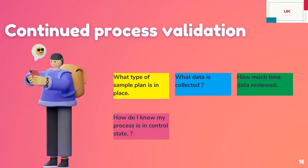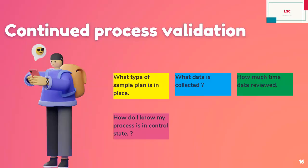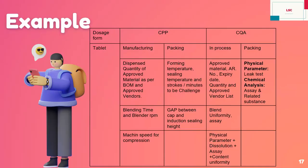Continuous process verification — this is not only validation, this is verification. For continued process verification, you have to write down: what type of sampling plan is in place for the verification, what data is collected, how frequently data is reviewed, and how do I know my process is in a controlled state. All this comes into verification, not validation. When you prepare your plan for verification, you have to decide the answers to these questions. Prepare your document with all these questions in mind so you can capture the results and program your CPV — continuous process verification.